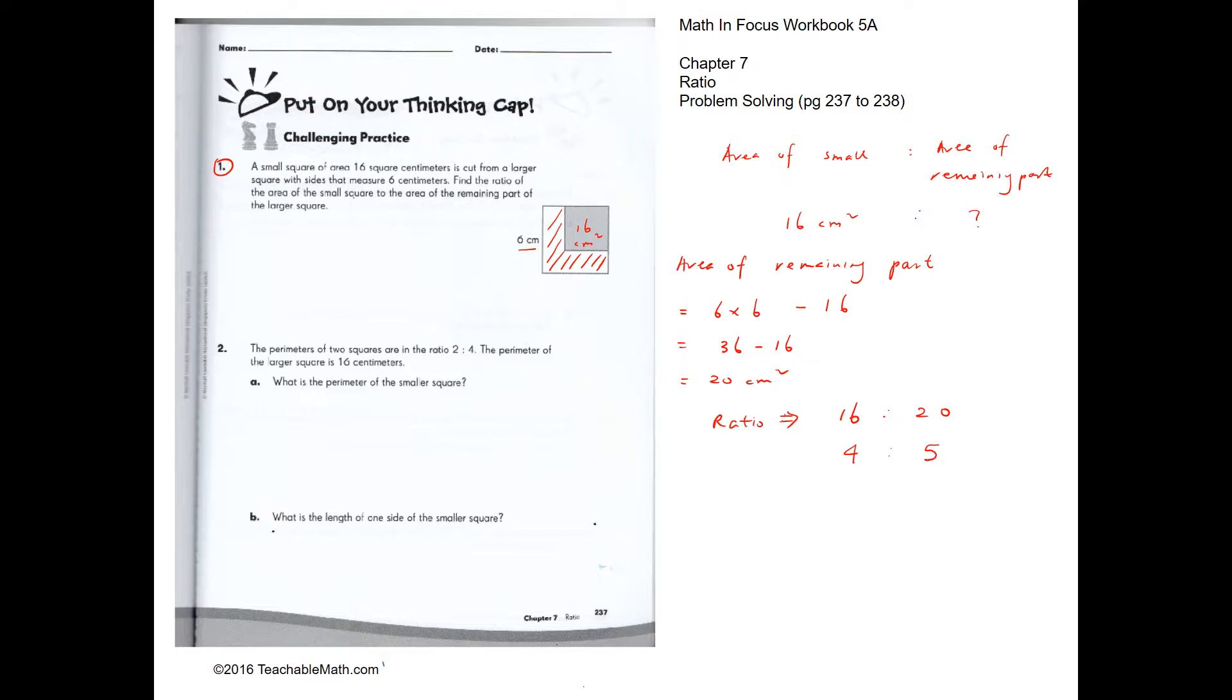Now for question 2. The perimeter of two squares are in a ratio of 2 is to 4. The perimeter of the larger square is 16. So what is the perimeter of the smaller square? This is times 4, so this will be times 4 as well. So this will be 8. The perimeter of the smaller square will be 8 centimeters.